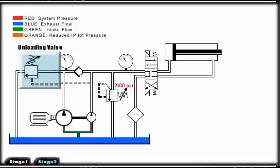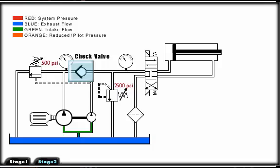Next we will look at the function of the check valve. When the system pressure is less than the unloading valve setting, flow from the high volume pump flows through the check valve to combine with the flow from the low volume pump.